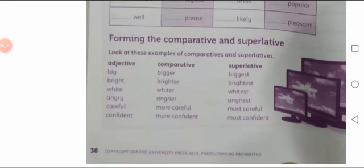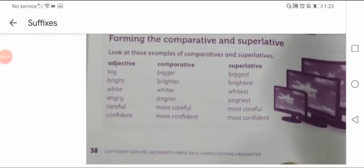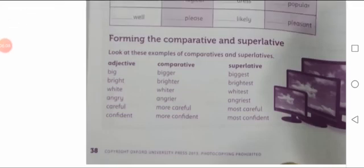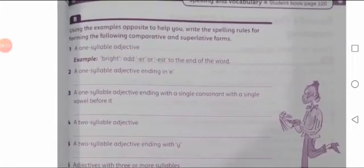So that was page number 38. On this page, in the first part, we read about prefixes and added some letters at the beginning of words to make new words, and then we read the comparative and superlative degrees of adjectives. Now come to the next page — page number 39 of the workbook, Part B.